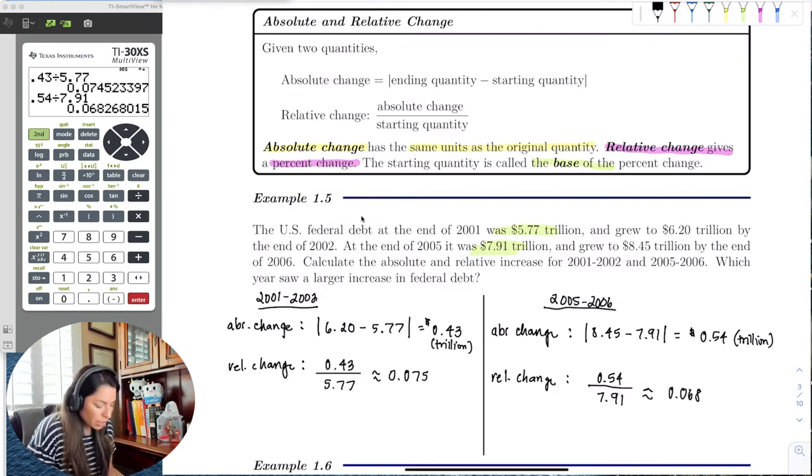If I change these each to the percent, I could see that this is going to be 7.5%, right? Because again, you're moving the decimal over twice. And over here for 2005-2006 would be 6.8%. So let me highlight these.